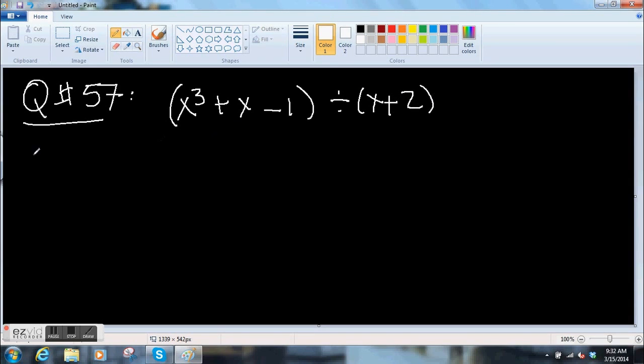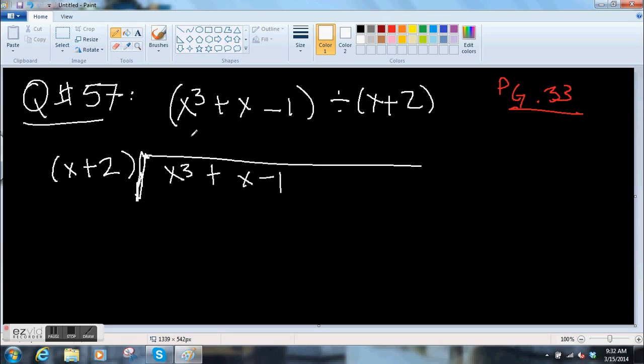So the problem looks like this. You have x cubed plus x minus 1 divided by x plus 2. So my first thought when I looked at this is I thought, well, how can I factor this and maybe there's an x plus 2 in there. But I didn't see it. So here's the other way to do it. This is the book's long way.